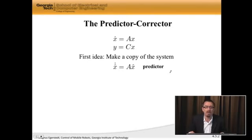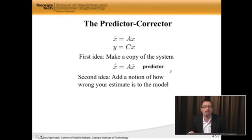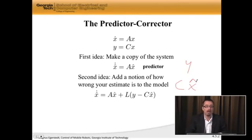But that's not enough. What I'm going to do now is add some kind of notion of how wrong or right the estimate is to the model. And one thing to note is, the actual output is y. The output I would have had, if the state was x hat, is C times x hat.